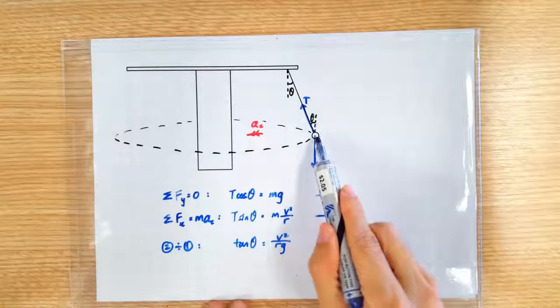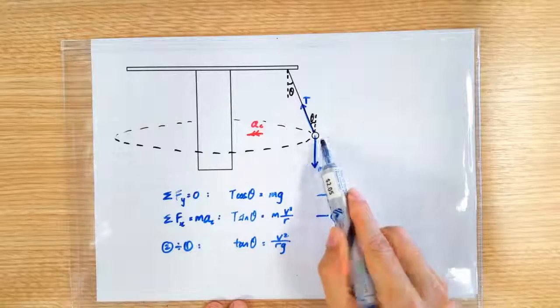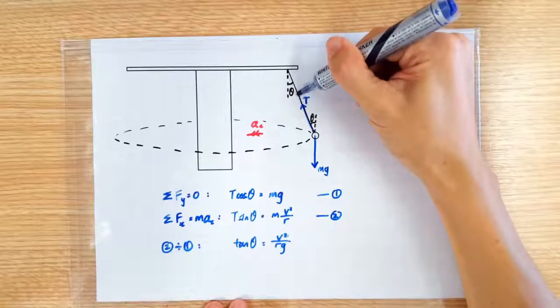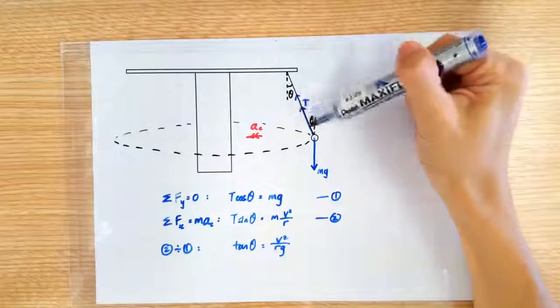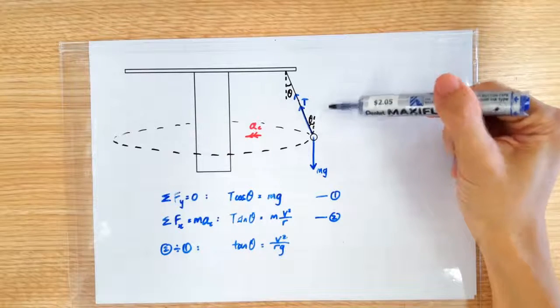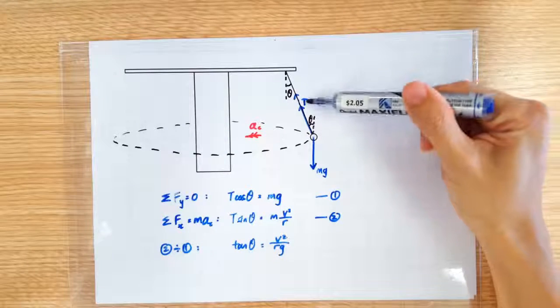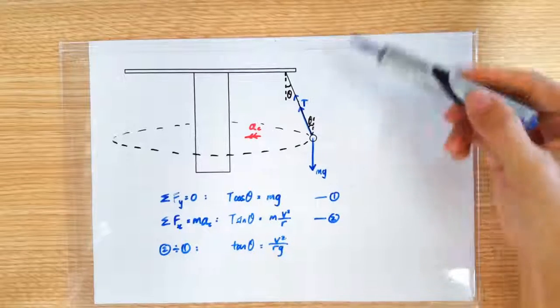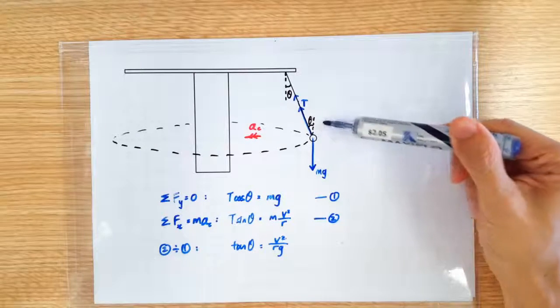So the chairs will want to drift outward, which makes this rope pull harder. So the tension force will increase. But if the tension force increases, that means vertically we do not have net force being equal to zero anymore, because the vertical component of tension is going to be larger than the weight of the chair, which means the chair will accelerate upward.